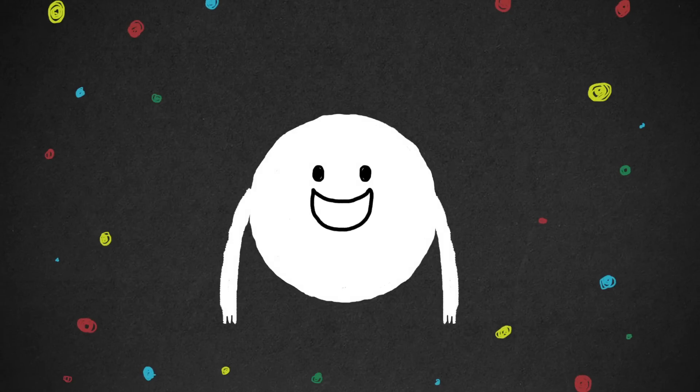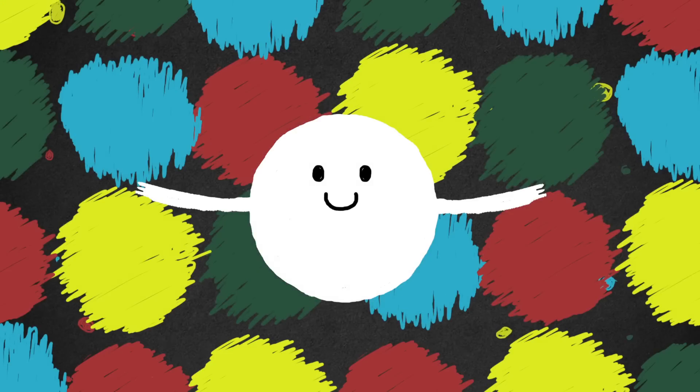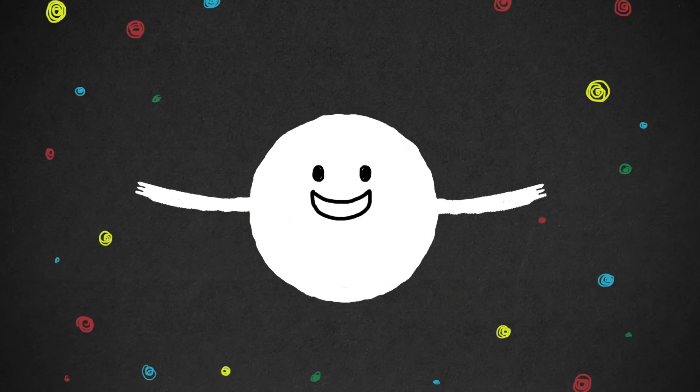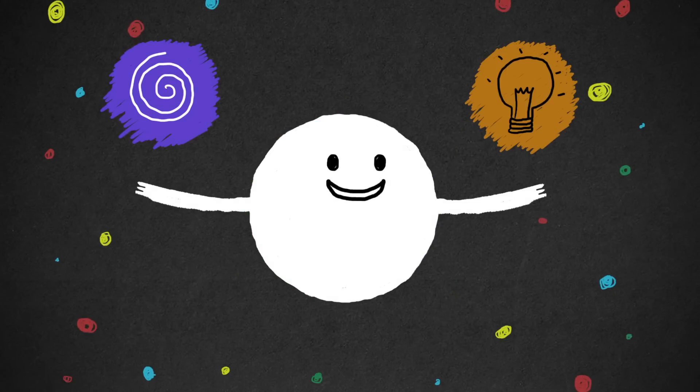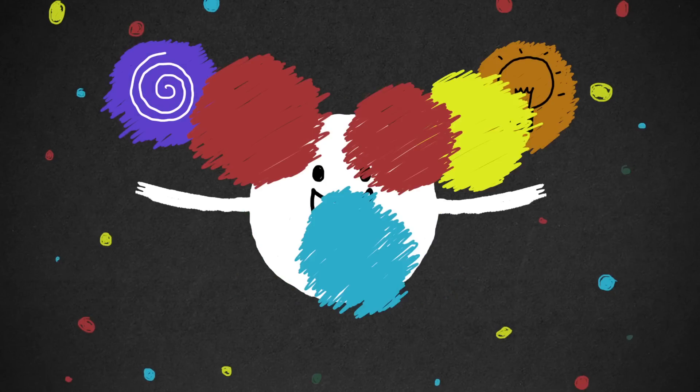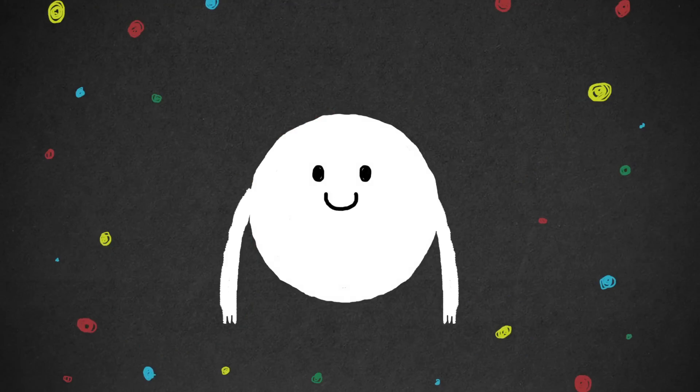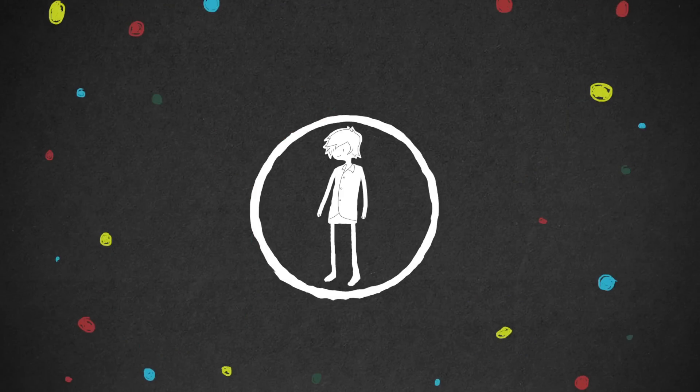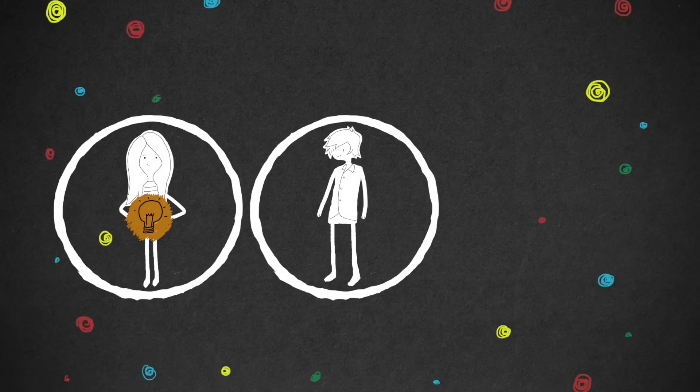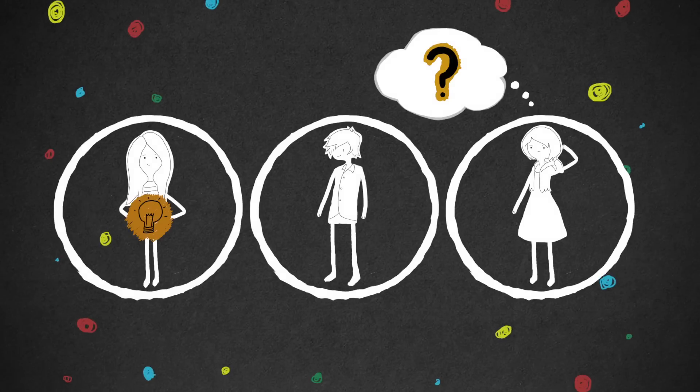The problem is, autism is a massive spectrum, and behavior can range from the very odd to the very, very brilliant, with lots and lots of different types in between. And it's because of this massive spectrum of behavior that it can be hard to understand who has autism, what autism is, and how you should think about it.